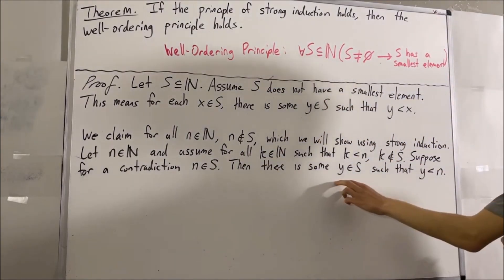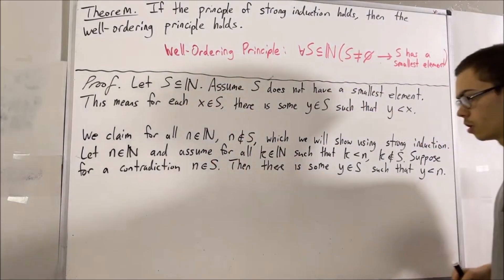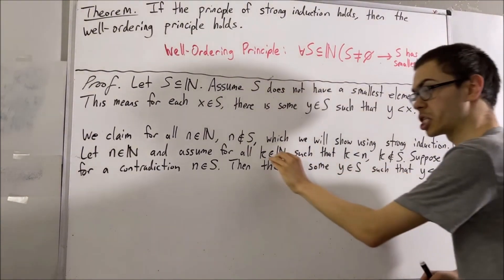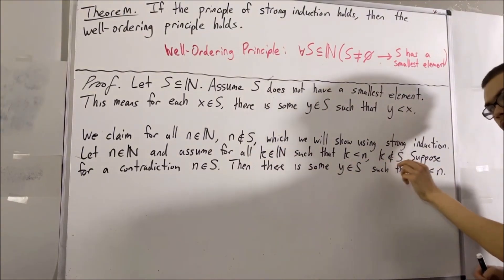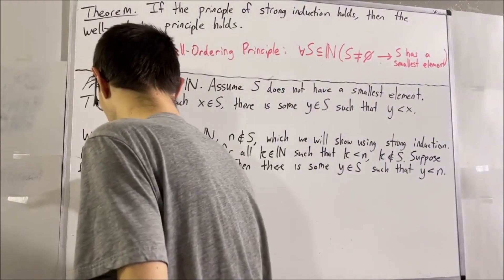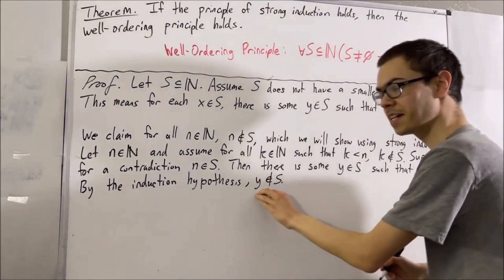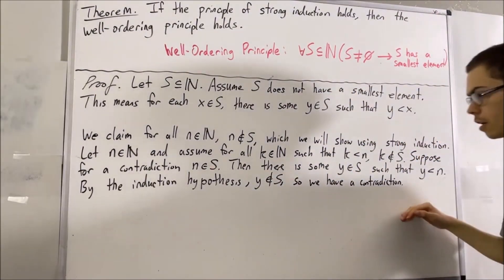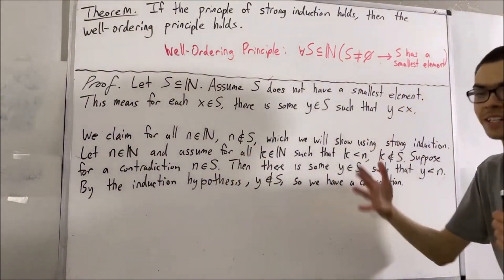Now notice: Y is an element of S, and since S is a subset of the natural numbers, Y is a natural number. So Y is a natural number less than N. But we know by our induction hypothesis that every natural number less than N is not an element of S. So since Y is a natural number less than N, it follows that Y is not an element of S. So we have that Y is an element of S and Y is not an element of S. This gives us a contradiction.